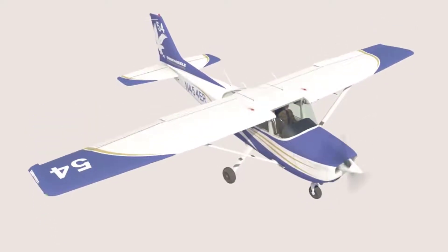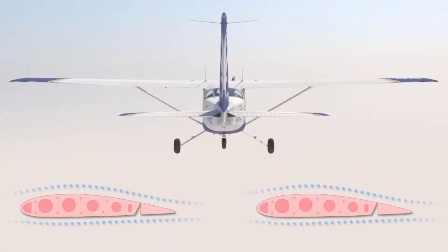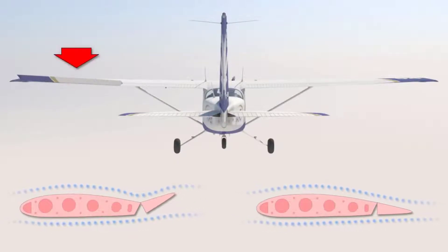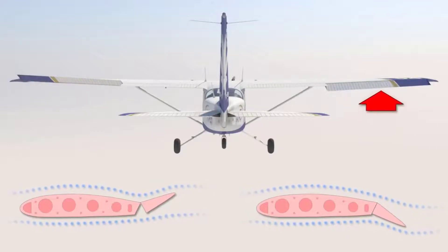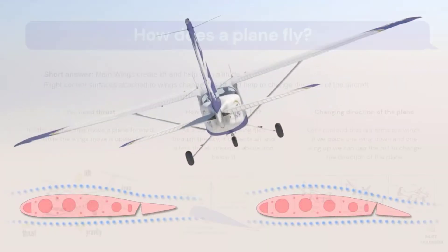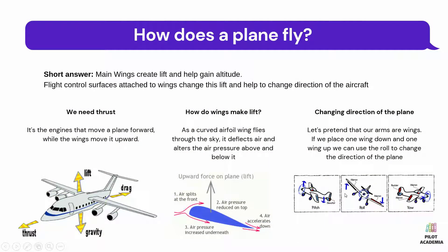To roll the plane to the right or left, the ailerons are raised on one wing and lowered on the other. As we can see from the picture, the wing with the lowered aileron rises while the wing with the raised aileron drops, because of the difference in air pressure under the wings.